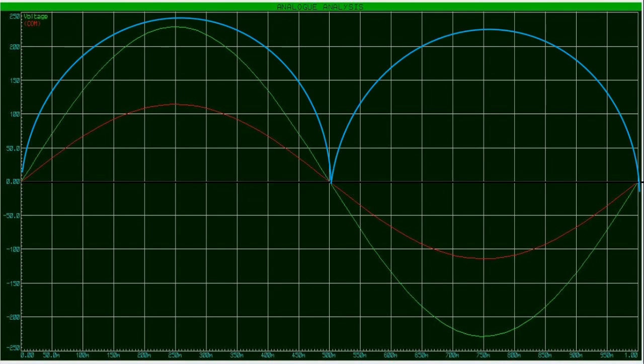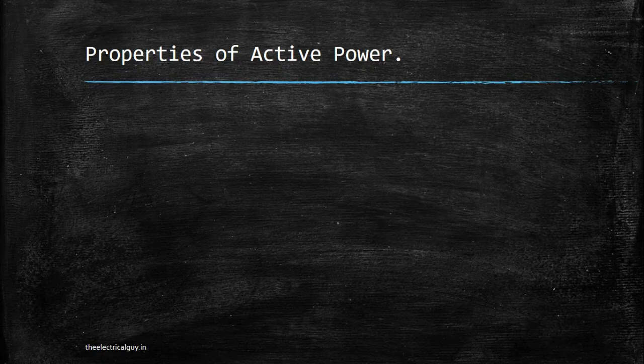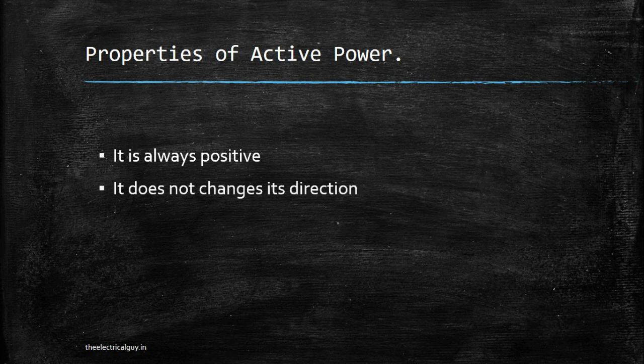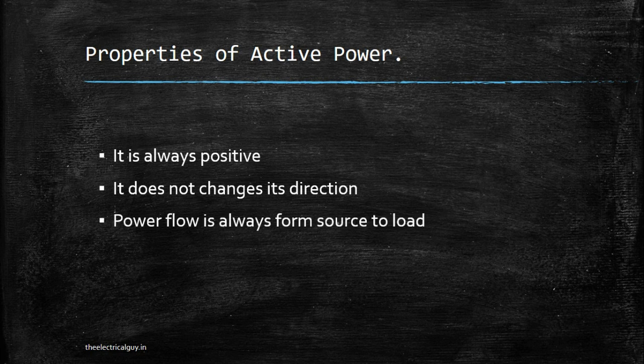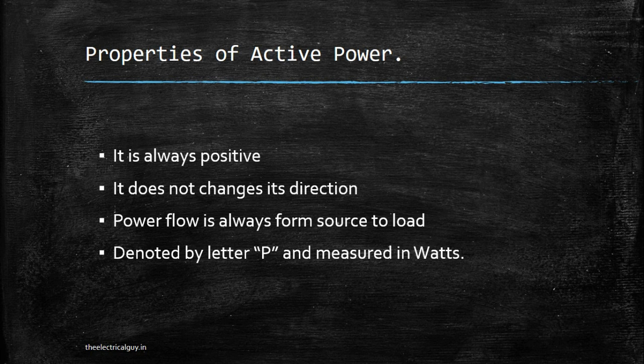Now let's see what are the properties of active power. It remains positive always. It does not change its direction — it only remains on the positive side and will never go to the negative side. Power flow is always from source to load. It is denoted by the letter P and measured in watts.